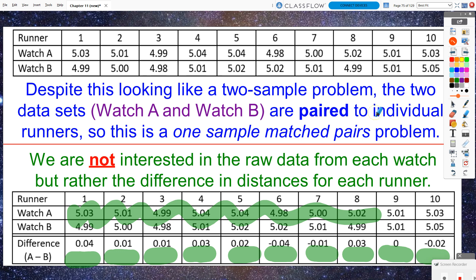A matched pairs problem is still truly a one sample problem. We just have one sample of values that represent differences between our varying treatments.